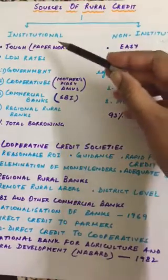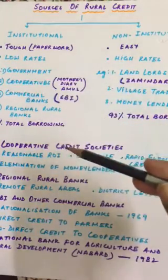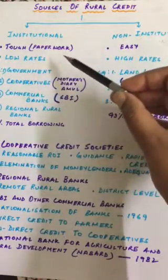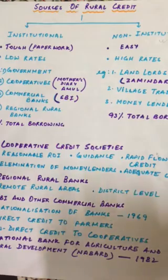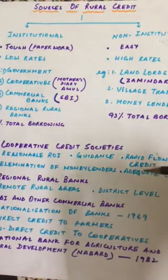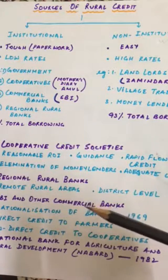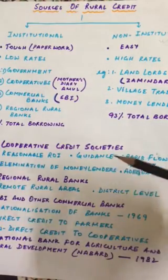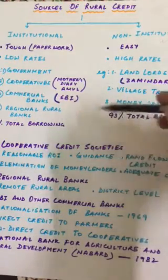In the case of institutional sources of rural credit, there is a lot of paperwork and formalities. There is a lot of background checking before credit is made available. Institutional sources of credit include regional rural banks and commercial banks. These are more reliable because they have a low rate of interest.